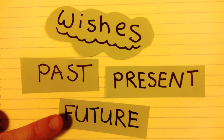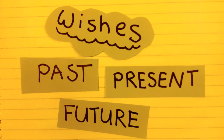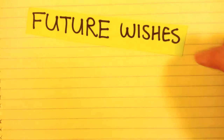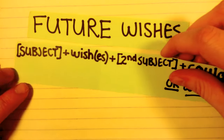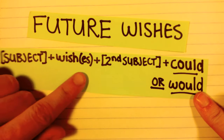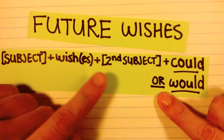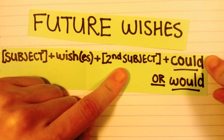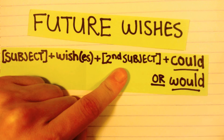So let's start by talking about how to express wishes for the future. This can be a wish for the immediate future or a long-term wish. To talk about wishes for the future, we follow this pattern: subject plus the correct form of the verb 'to wish,' plus the second subject, and then we add 'could' or 'would' and the infinitive form of the verb.